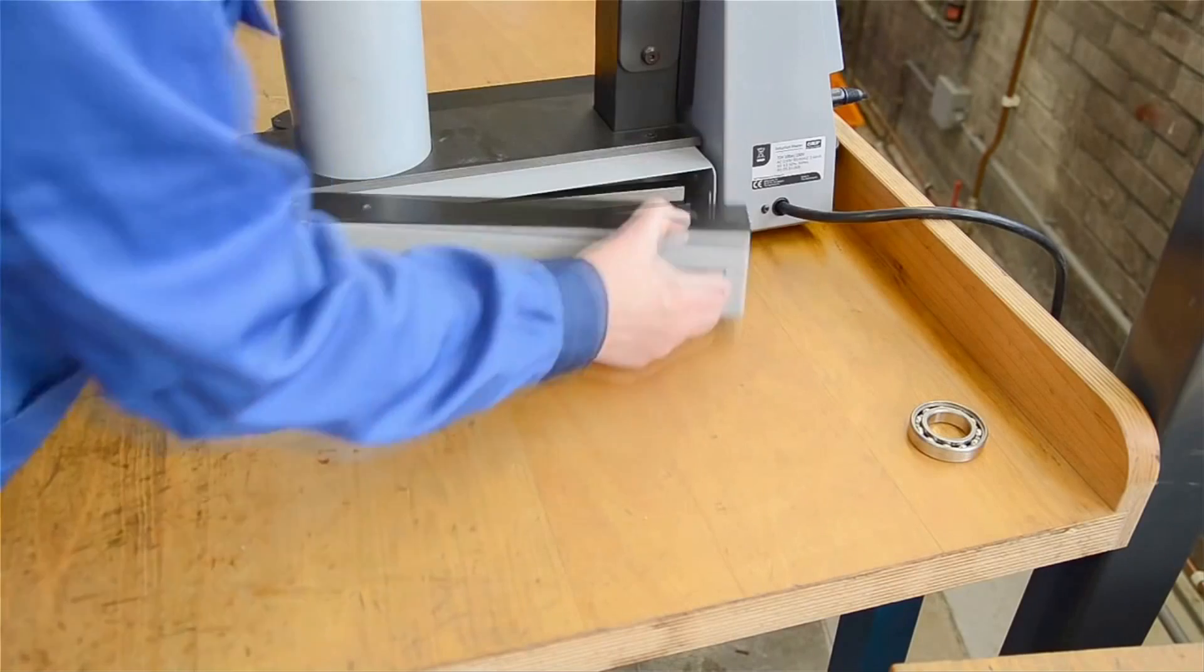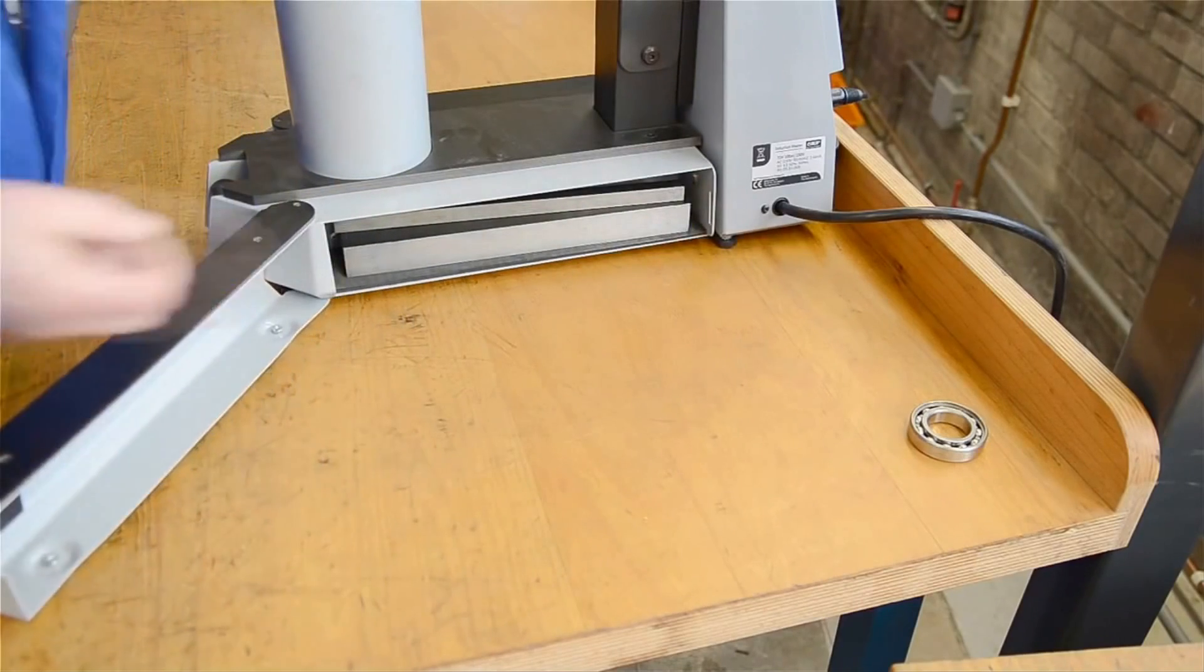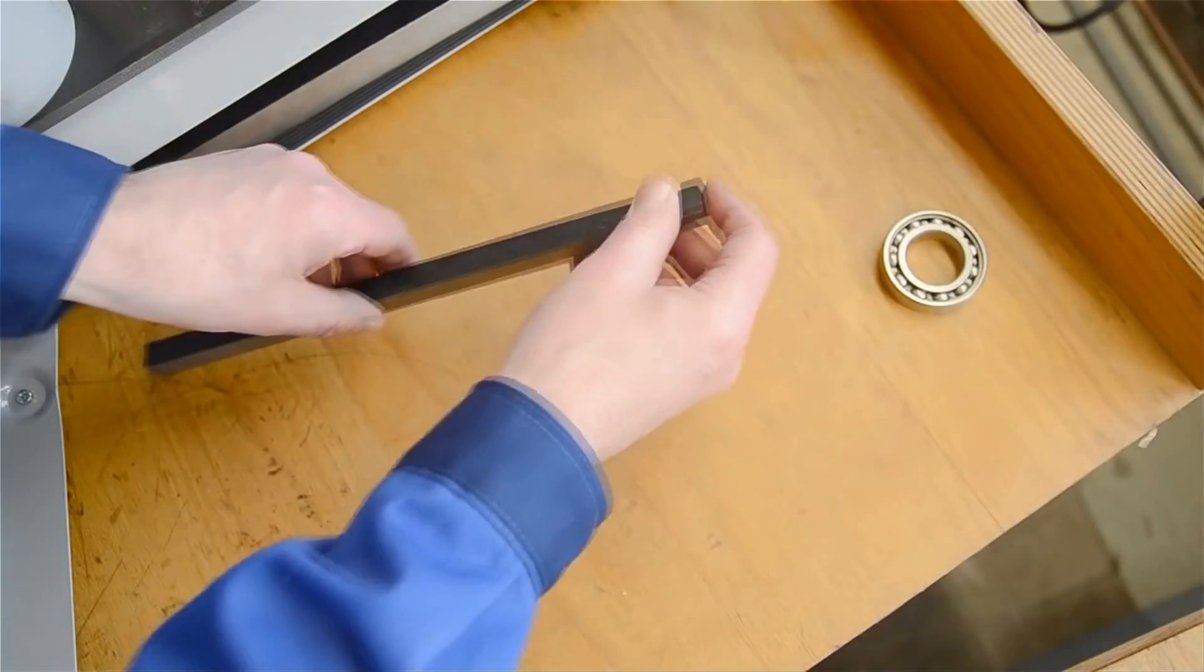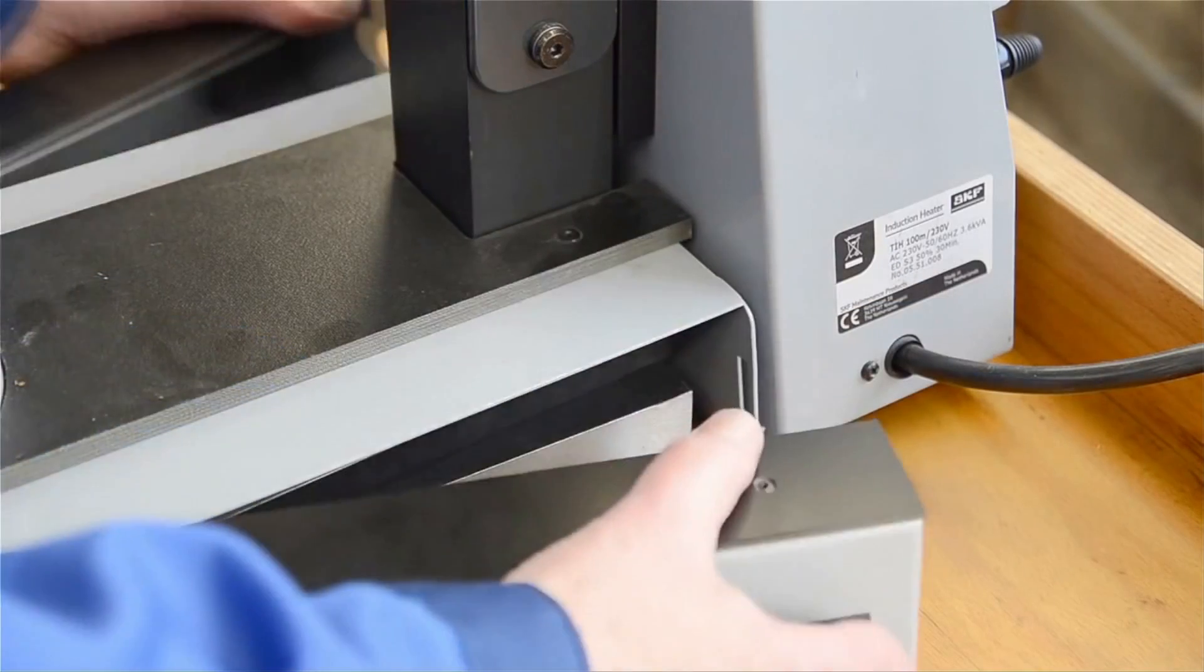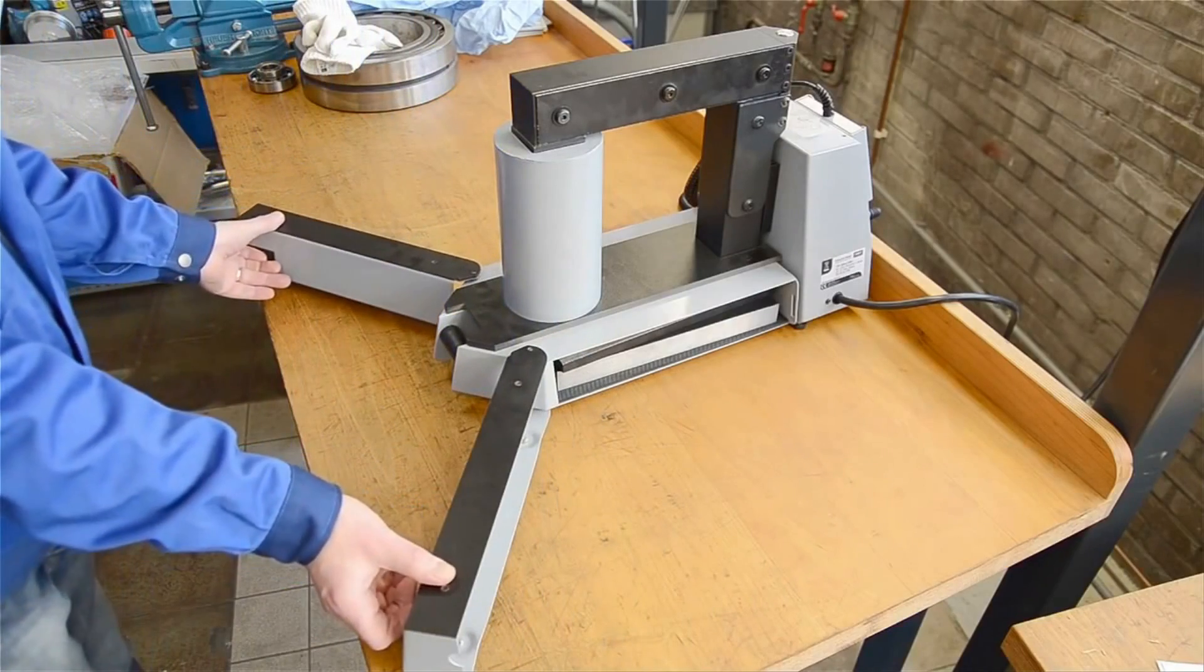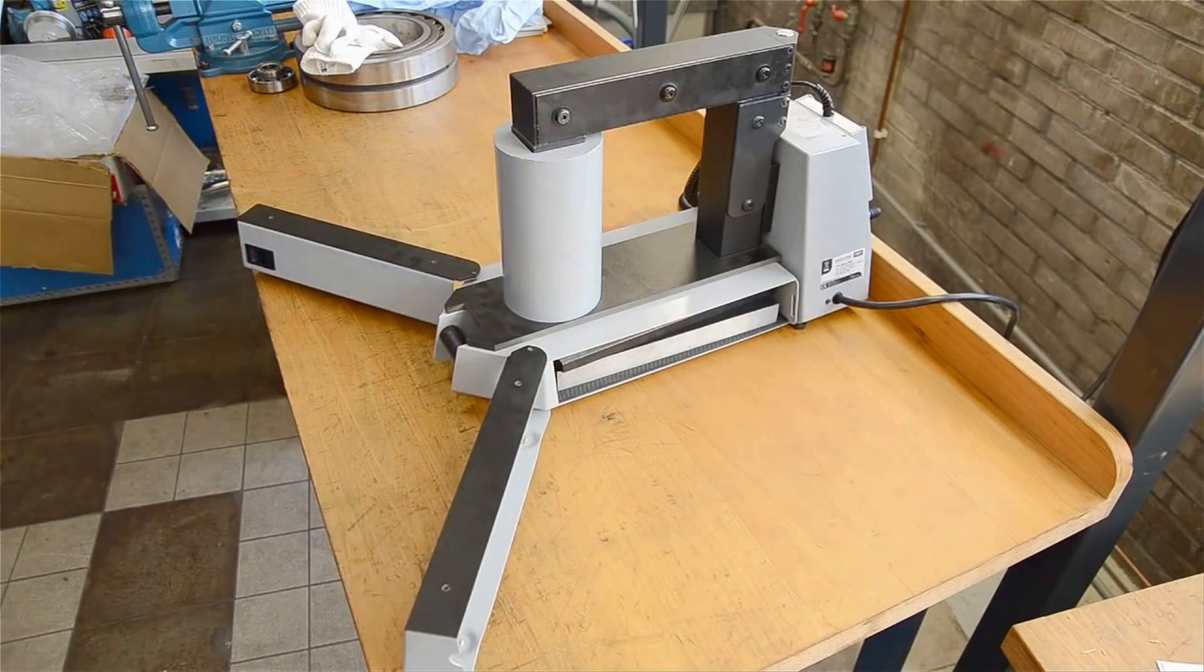Choose the appropriate yoke for the bearing to be heated and just place the bearing on the yoke. Better still, if there is space around the coil, then place the bearing here for even higher efficiency. SKF heaters have built-in adjustable support legs to make this option really easy.